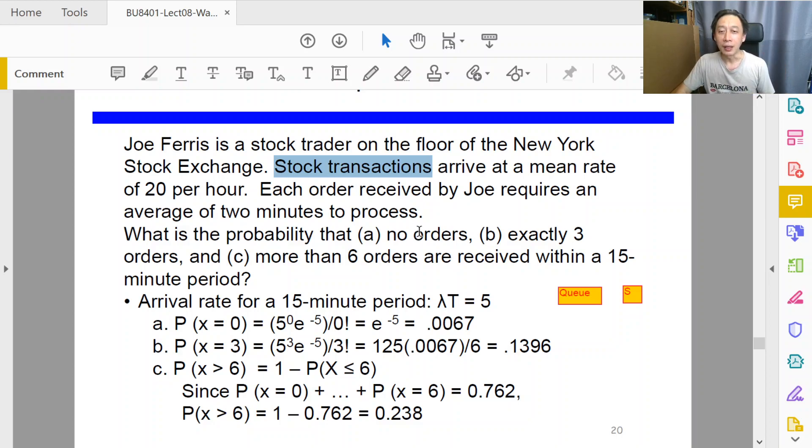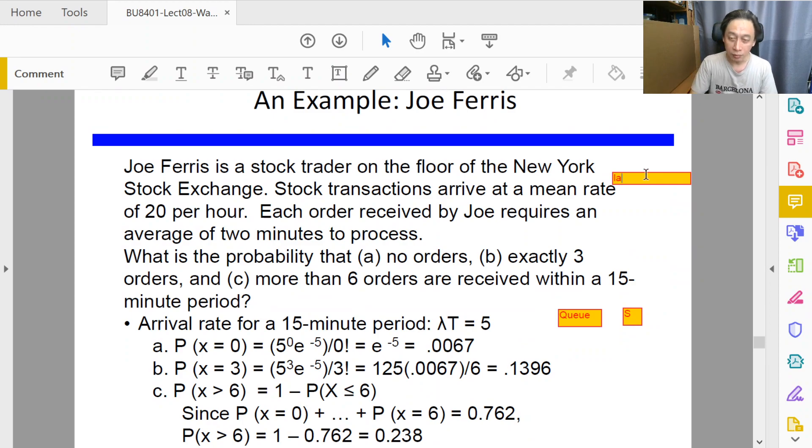Each transaction received by Joe requires processing of two minutes, which means first of all Joe must be the server and there is only one server. So K goes to one because there's only one server. Number two is that one over mu is two minutes, because it is processing time, not the rate of processing.